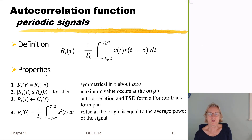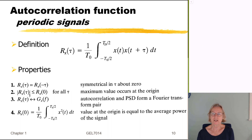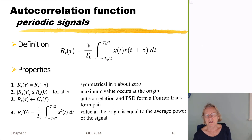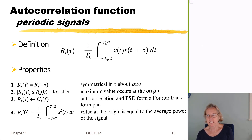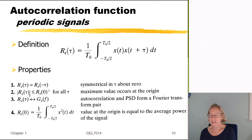Just as we defined an autocorrelation function for an energy signal, we can also define one for a power signal — in particular for a periodic signal. In that case we look at the correlation over one period rather than from minus infinity to infinity, and average over the length of that period. The properties are very much the same: it is symmetric around tau equal to zero, the maximum occurs at zero lag, and the power spectral density forms a Fourier transform pair with the autocorrelation function. The value at the origin of the autocorrelation function equals the average power of the signal.